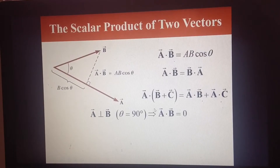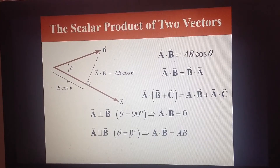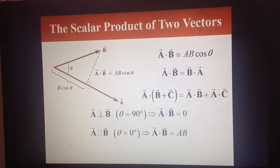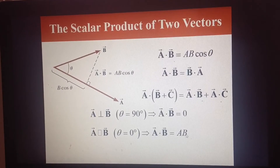Now, if two vectors are at 90 degrees — if theta equals 90 degrees — then because the cosine of 90 is zero, the dot product of a and b is just equal to zero. On the other hand, if the angle between two vectors is zero, meaning the two vectors are parallel, then the cosine of zero is one, and the dot product a dot b is just the magnitude of a times the magnitude of b.